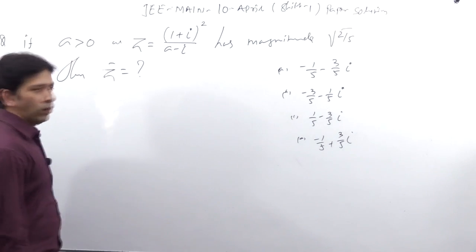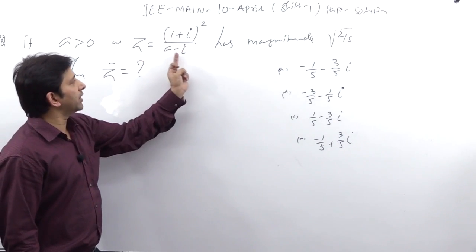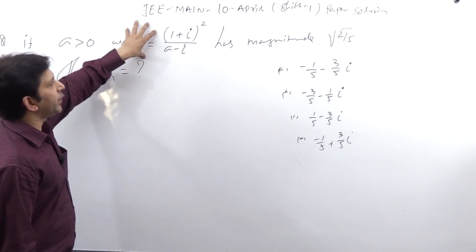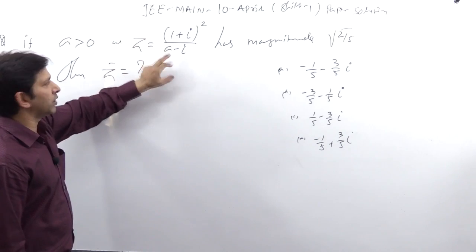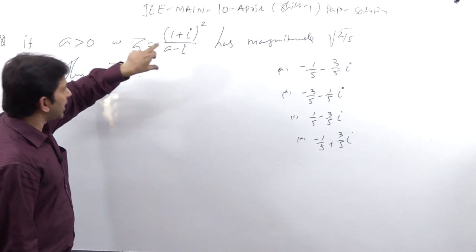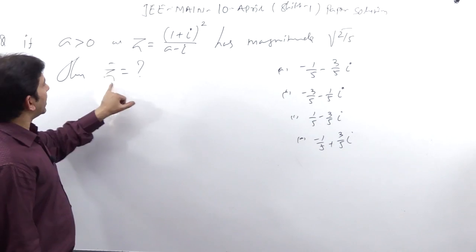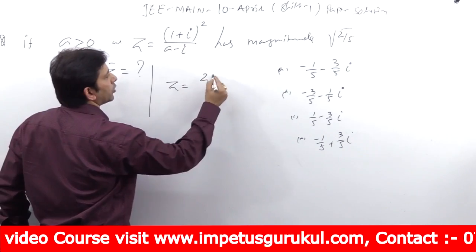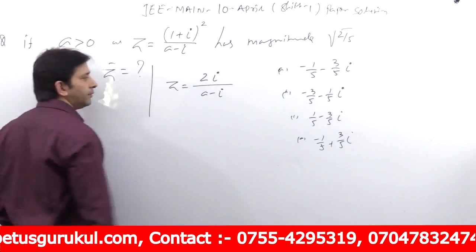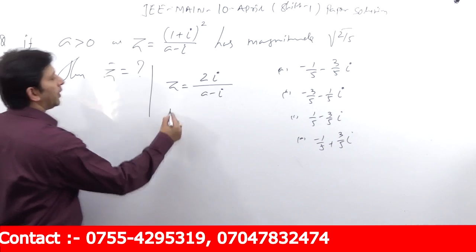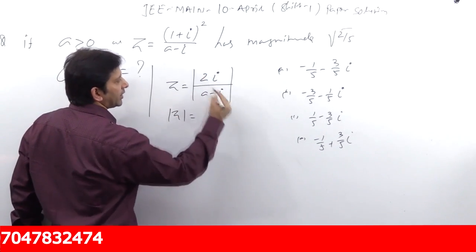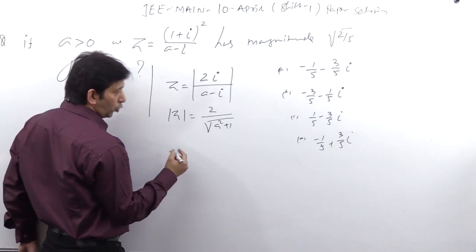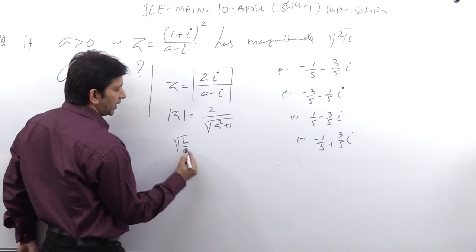If a greater than 0, z equal to (1 + iota)² upon (a - iota) has magnitude root(2/5), then find z bar. Simple question, magnitude se a find out karo. Z kya diya hai, isko all square karenge to 2 iota upon (a - iota). Magnitude lelo to two upon root(a² + 1) equal to root(2/5).